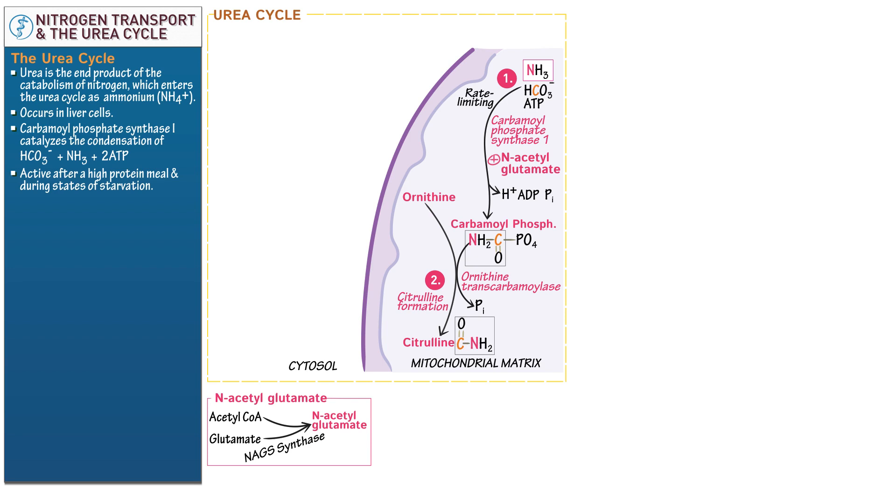Next, show that citrulline exits the matrix and enters the cytosol. Introduce an aspartate and specify its amino group, which will track through the urea cycle. Show that argininosuccinate synthetase catalyzes the reaction to combine aspartate with citrulline to form argininosuccinate.